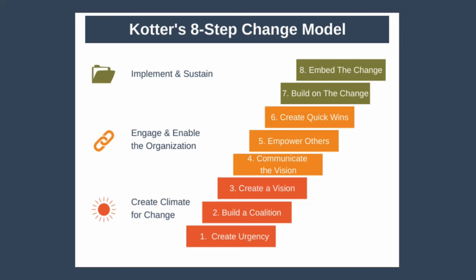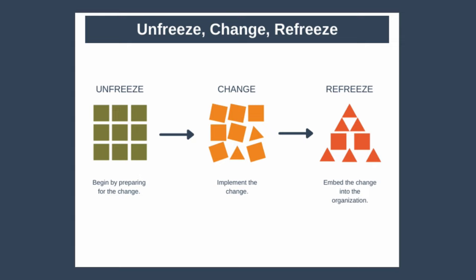Next, we have Lewin's change model, also known as unfreeze, change, refreeze. Kurt Lewin is widely considered the founding pioneer of change management. It's worth noting that there is evidence that Lewin never developed the three-step model, and that it only came into being after his death. This model involves creating the desire to unfreeze the current status quo — the desire to change things. Next, you implement the necessary changes. And then finally, you solidify the new ways of working as the new normal.